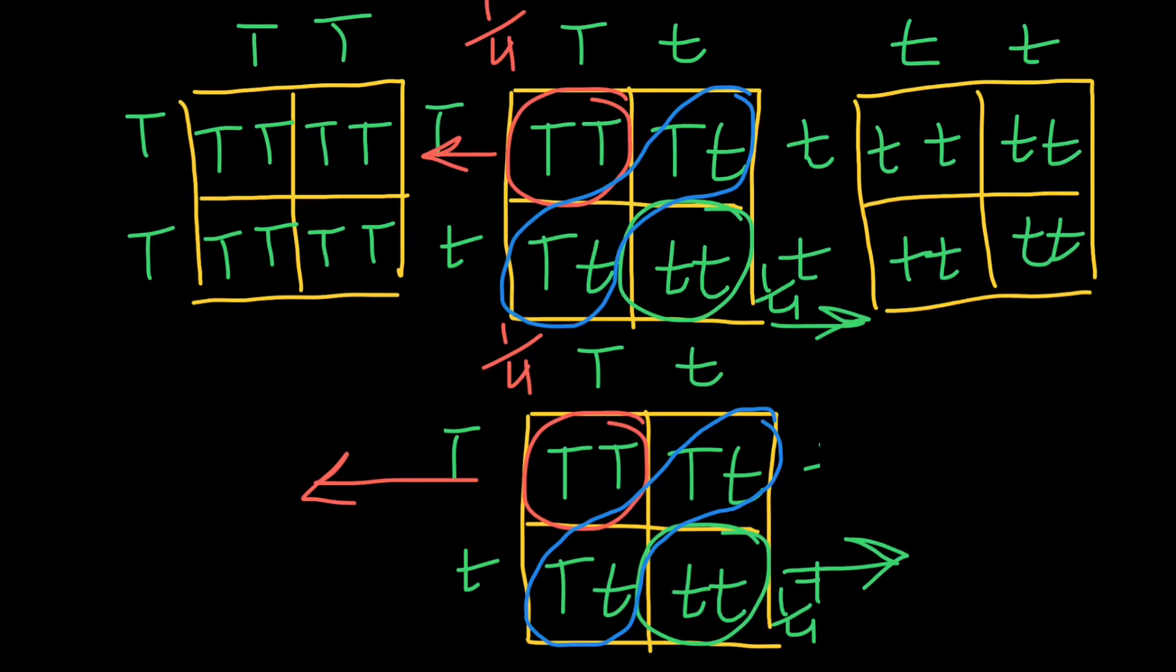And after, say, 10 such cycles, we are going to lose heterozygous completely and would end up with only two genotypes, which is going to be homozygous dominant and homozygous recessive. This is what in genetics we call loss of heterozygosity.